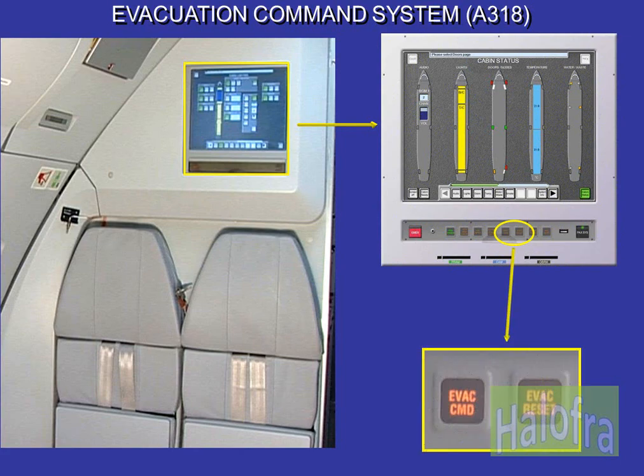On the A318, the emergency evacuation command and reset from the PERSA station are two push buttons, located on the FAP hard key panel.